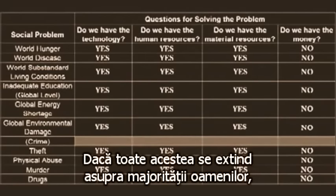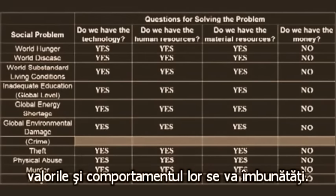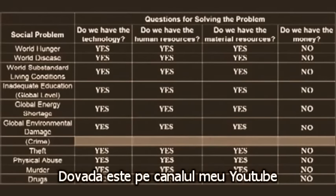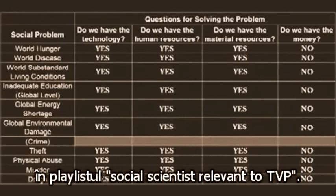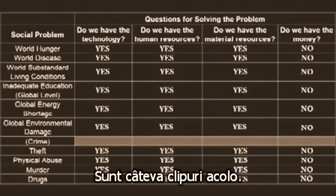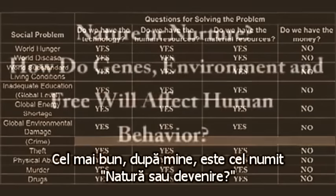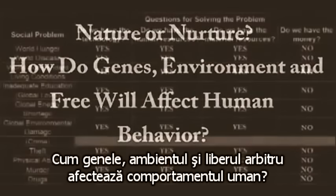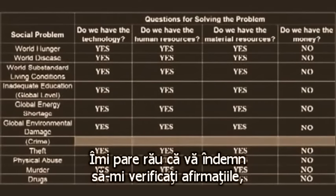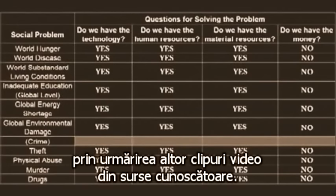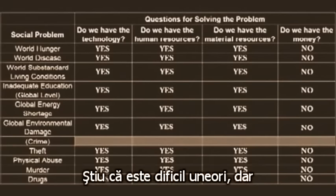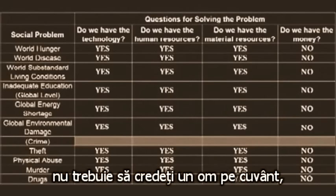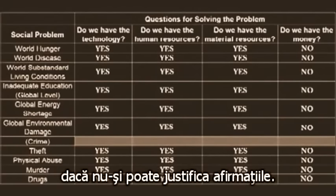If you better one's living environment, you better the person. Spread that over groups of people and you'll see values and behaviors change for the better. Proof of that statement is also on my YouTube channel in the Social Sciences Relevant to TVP playlist. The best of the lot, at least in my opinion, is called 'Nature or Nurture? How do genes, environment, and free will affect human behavior?' It's not wise to just take someone's word for it if they can't provide justification of their statements.